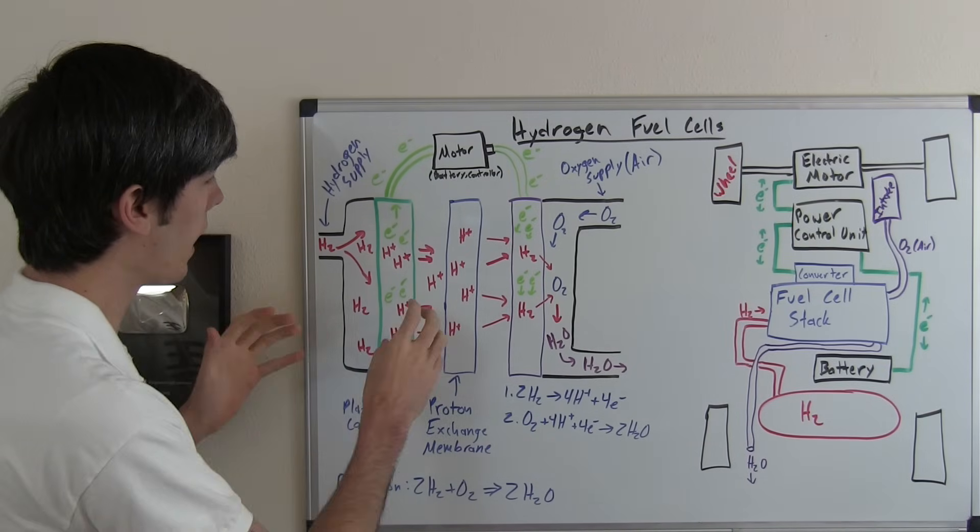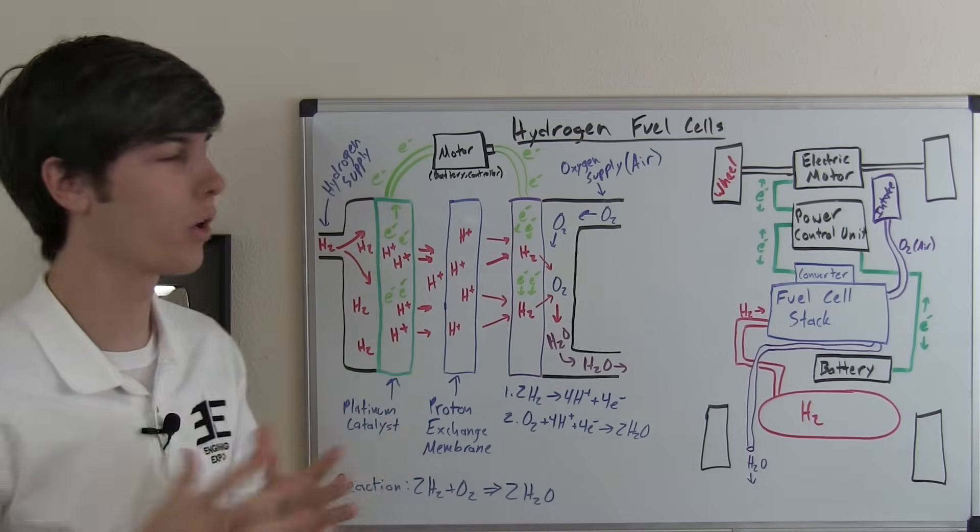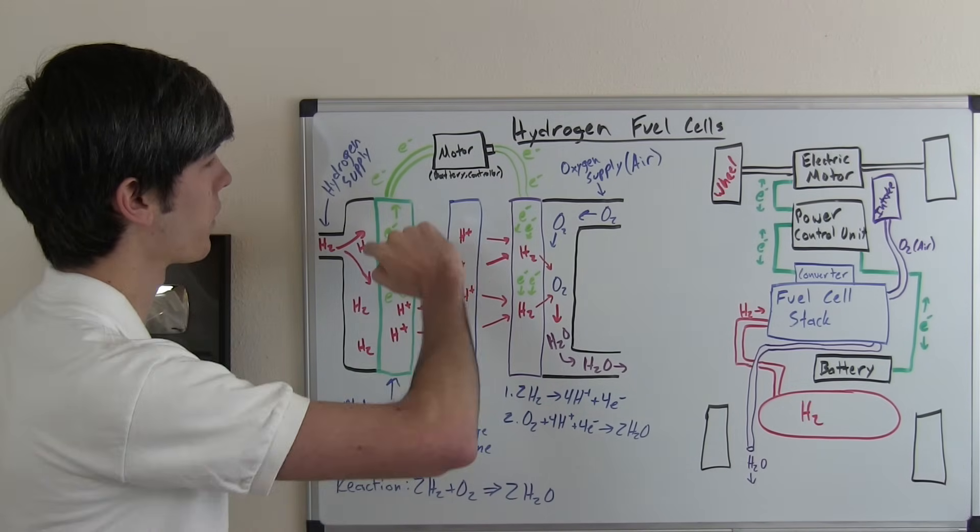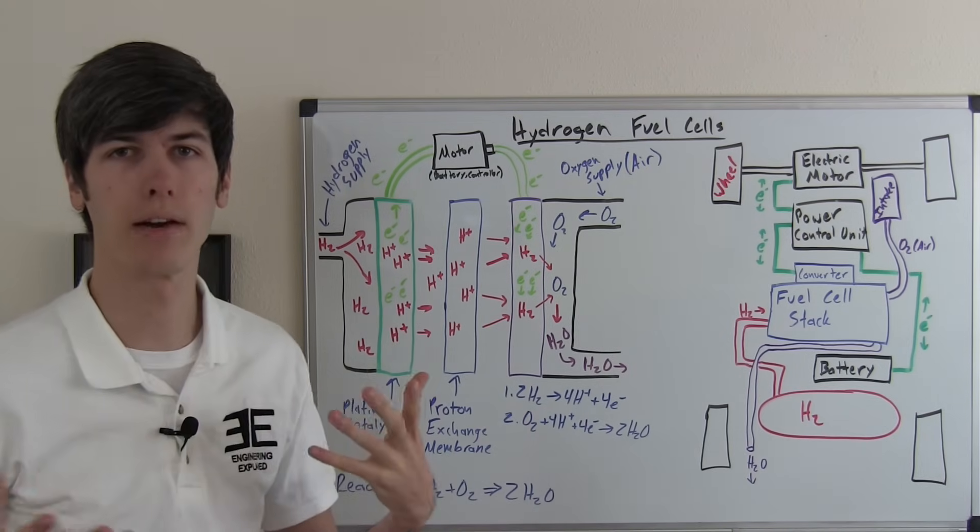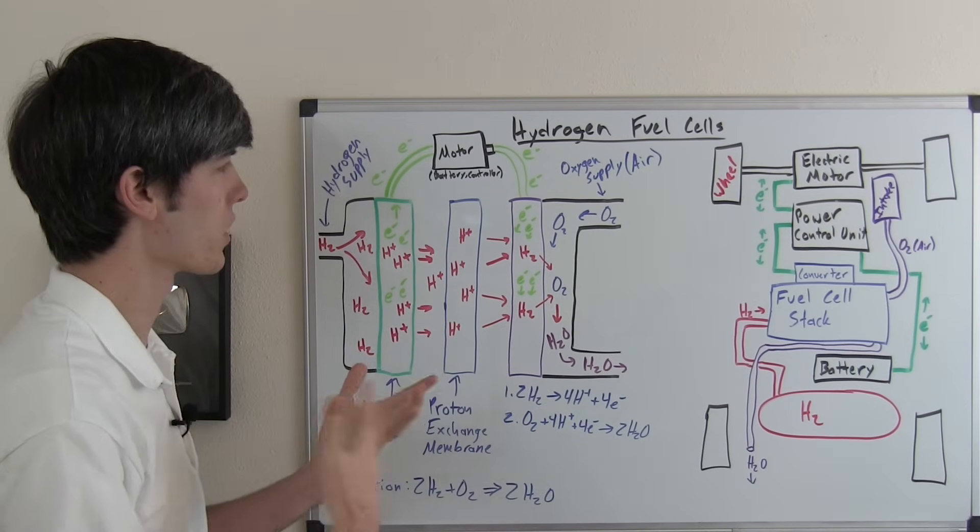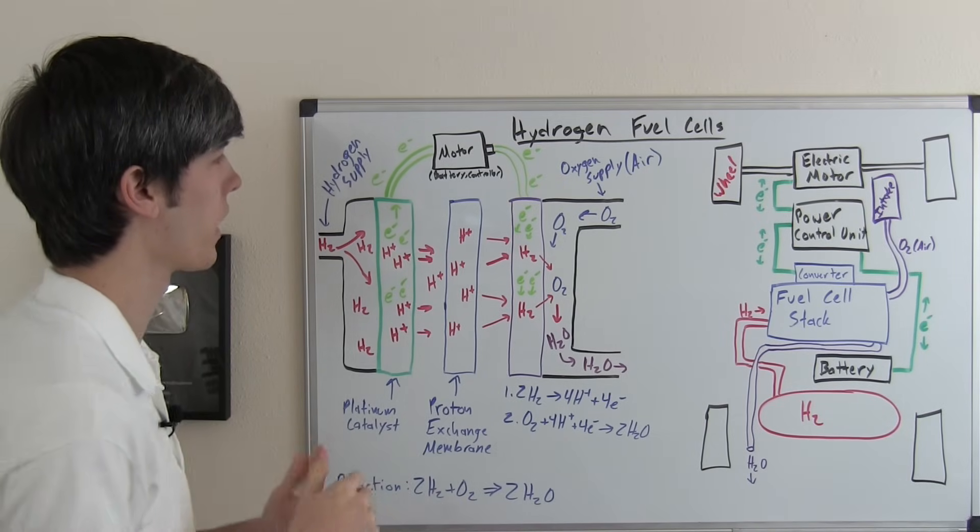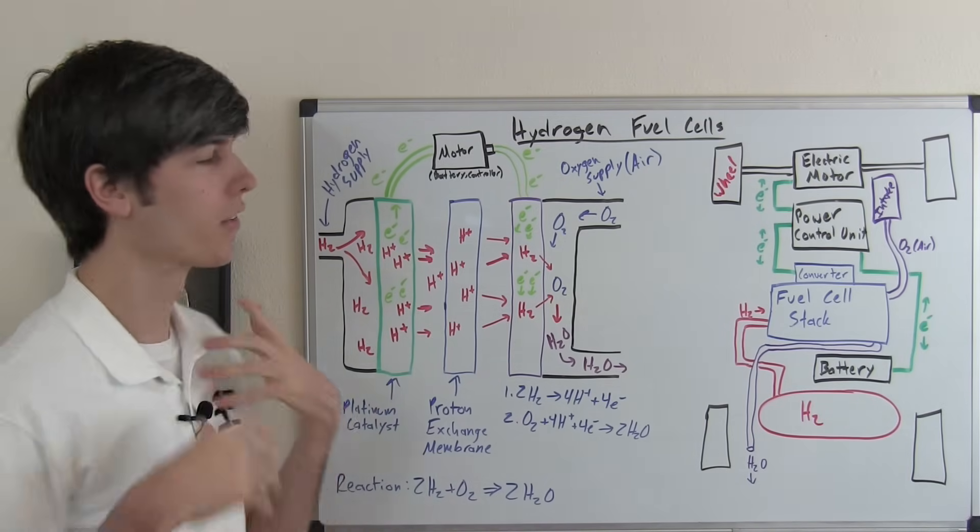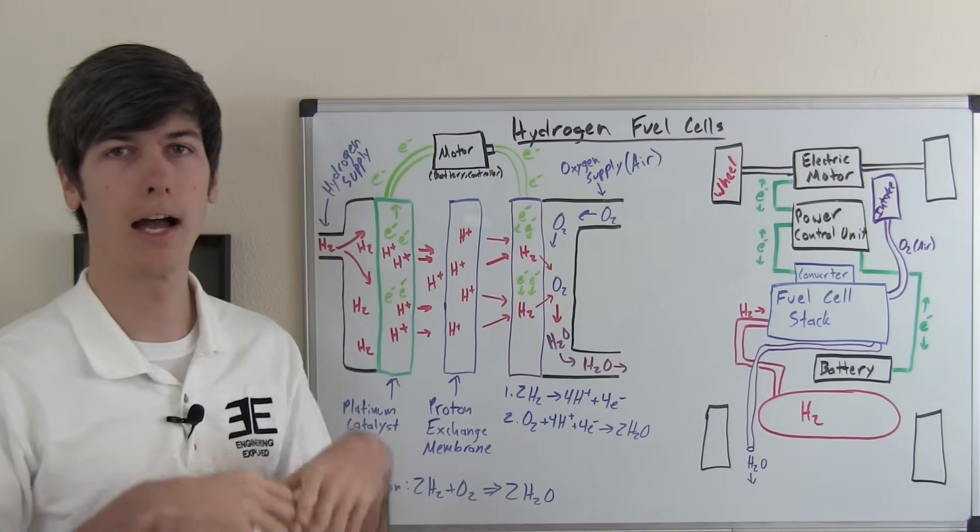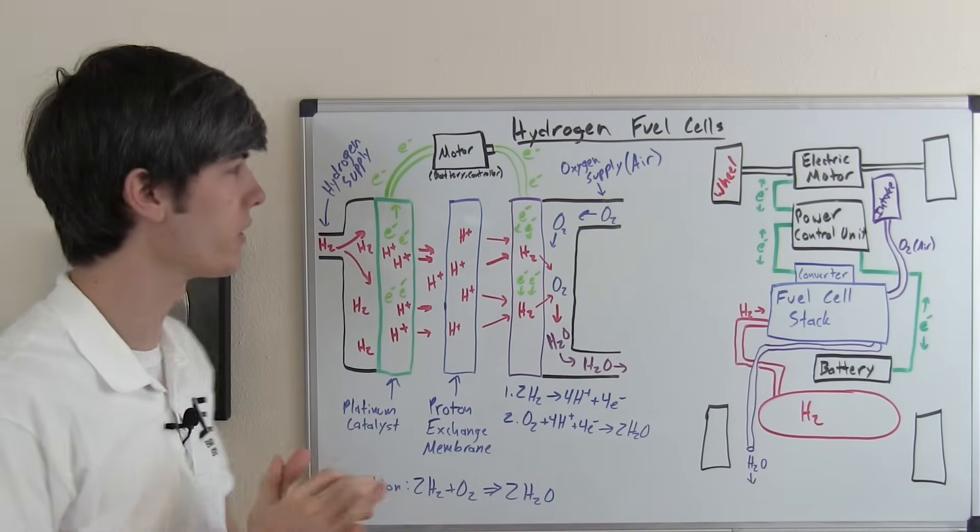So as these hydrogens are passing through, the electrons have to go somewhere else. And that's where they're going to travel and power whatever it is that you're attempting to power. Whether that be a light bulb, an electric motor in this case, charging a battery, sending that power to a controller and letting the controller distribute it where it needs to go.